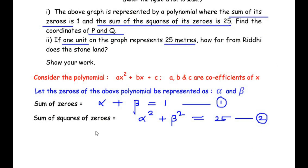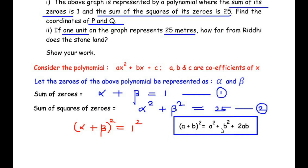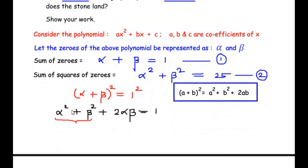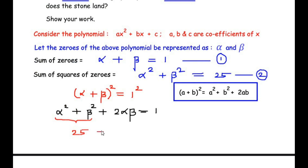Now let us go back to equation 1 and square both sides. So (alpha + beta)² = 1² = 1. Using the algebraic identity (a + b)² = a² + b² + 2ab, we expand the left side to get: alpha² + beta² + 2·alpha·beta = 1. We know from equation 2 that alpha² + beta² = 25, so substituting: 25 + 2·alpha·beta = 1.